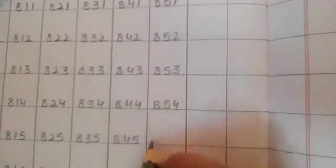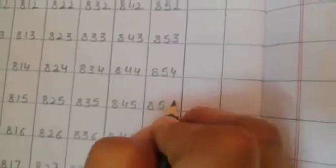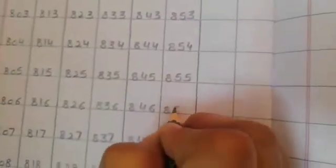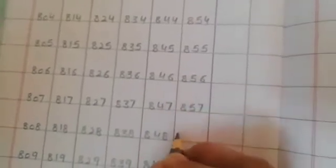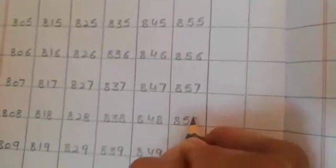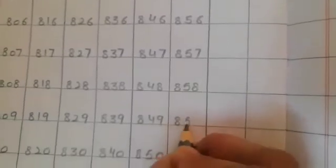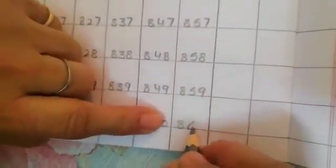850, 851, 852, 853, 854, 855, 856, 857, 858, 859. What comes after 849?